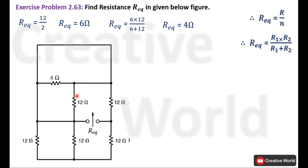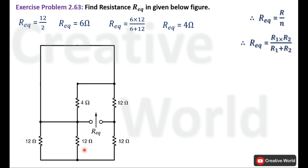We replace these two resistances with a single 4 Ohm resistance. The next two resistances are also connected in parallel with the same value of 12 Ohm each. Using the same formula as before, R divided by N gives 12 divided by 2, so their R equivalent is also 6 Ohm.